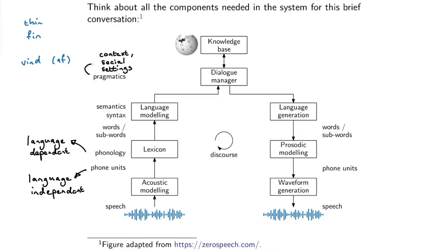All of this happens within a particular context — in my example, wanting to know the weather from Google. In the reverse direction, we query the knowledge base, the dialogue manager decides what information to convey, and a language generation component produces words. Words by themselves don't convey everything needed to synthesize speech, so we model rhythm, intonation, and stress using a prosodic modeling block. That outputs phone units again, which pass through a waveform generation module, which kicks back the response.